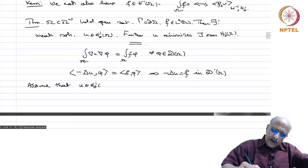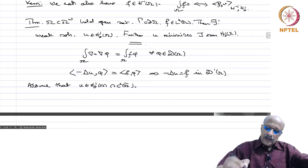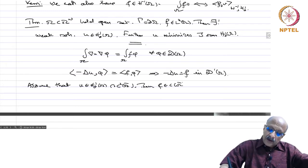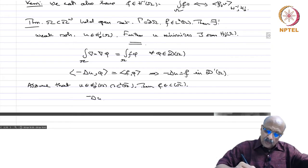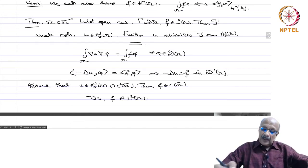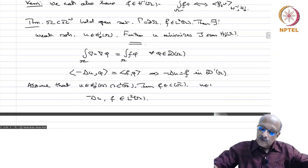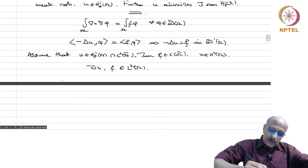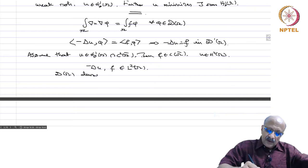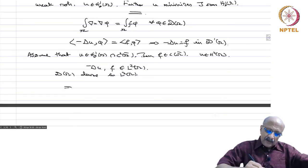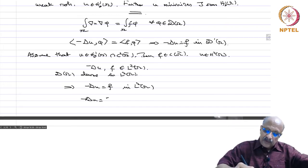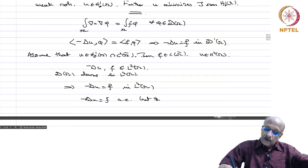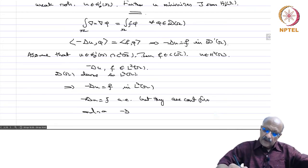Now assume u belongs to H^1_0(omega) ∩ C^2(omega-bar). Then f will belong to C(omega-bar), and minus Laplacian u belongs to L^2(omega) because u is in H^2(omega). Since D(omega) is dense in L^2(omega), this implies that minus Laplacian u equals f in L^2(omega). That means minus Laplacian u equals f almost everywhere, but they are continuous functions, so minus Laplacian u equals f pointwise.